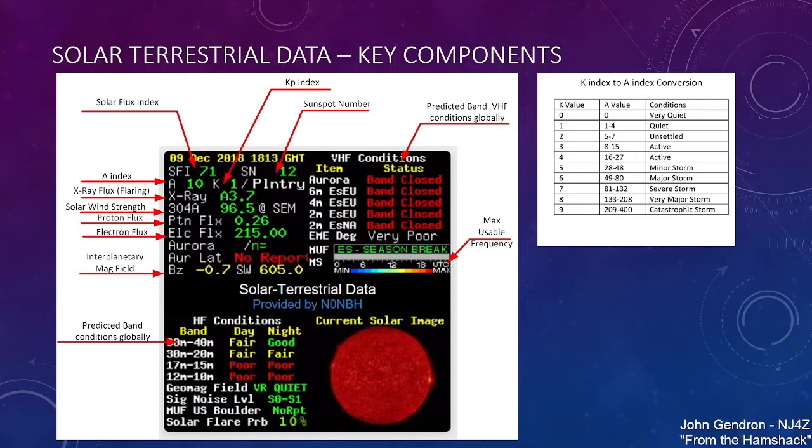When you have 100, 150, it's going to be pretty good for the high bands, but not as good for low bands. Then you have the sunspot number, which is right here. Sunspot number, that's exactly what it means. It's the number of sunspots that are on the Earth-facing side of the sun.